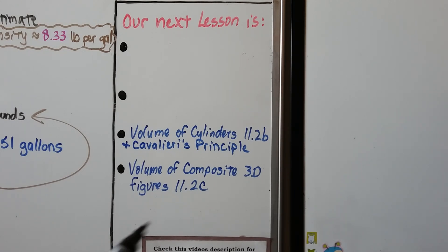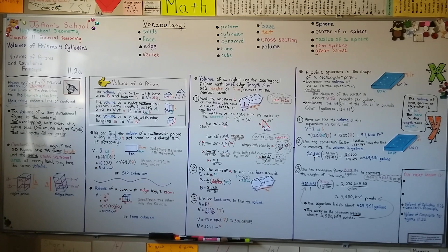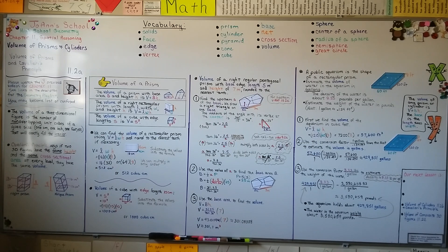That's it for the first part of this lesson. Sections 11.2b and 11.2c cover the volume of cylinders and more on Cavalieri's Principle, then composite 3D figures. If you were confused about apothems, see section 10.2c; for trig ratios, see section 8.2a. Links to those videos are in the description. I hope this was helpful — see you next time!